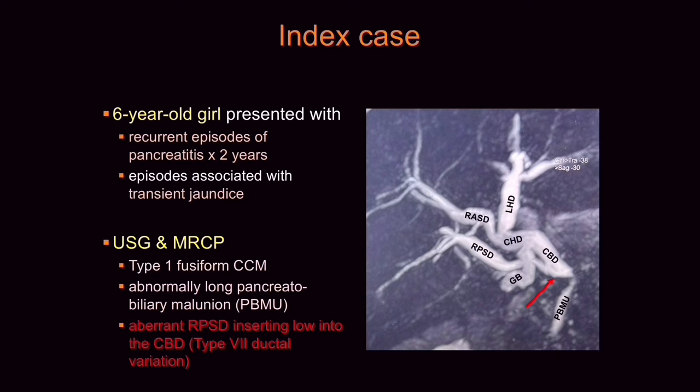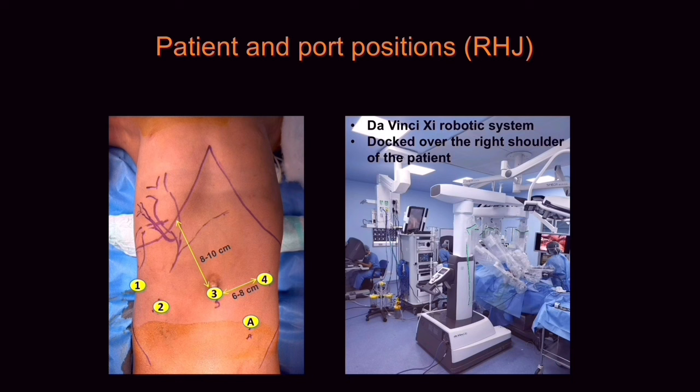These are the port positions for a robotic hepaticojejunostomy. We use 4 robotic ports and 1 assistant port. The robotic ports are placed in a straight line. The distance between the working ports should be 6 to 8 cm and the distance of the optical port from the target organ should be 8 to 10 cm.